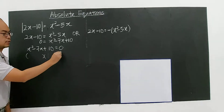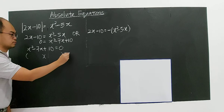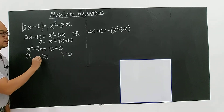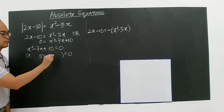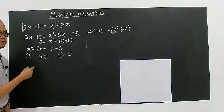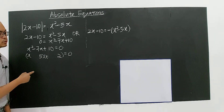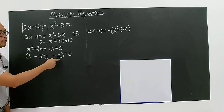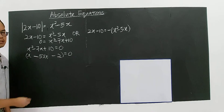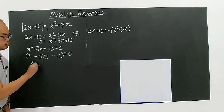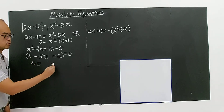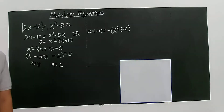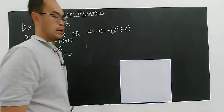Factorizing: you have x and x. Since 5 times 2 equals 10 and 5 plus 2 gives 7, the factors are negative 5 and negative 2, giving negative 7. So from here you have two solutions: x equals 5 and x equals 2.